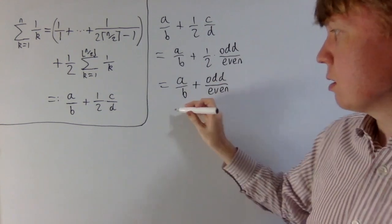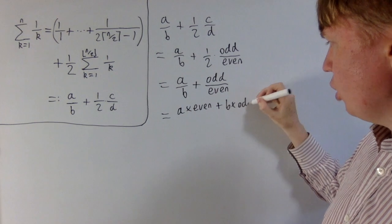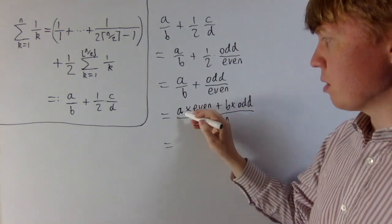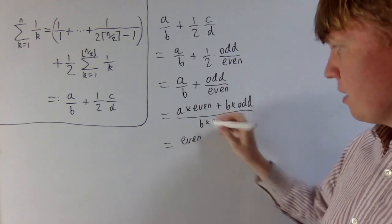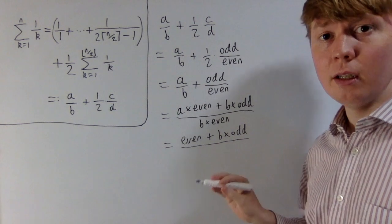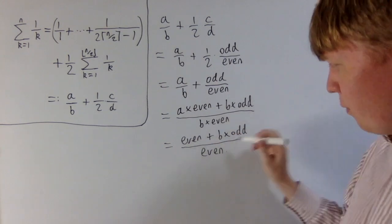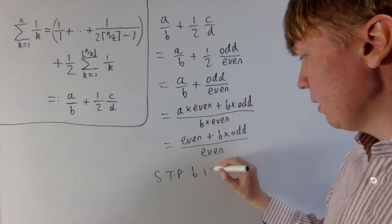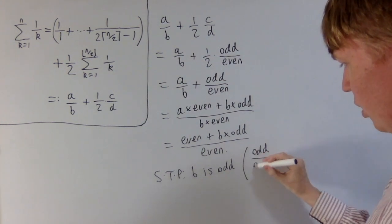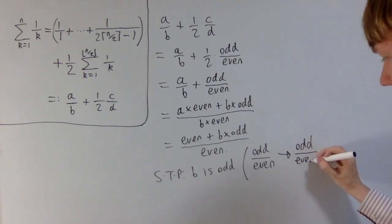Next we cross-multiply to turn this into a single fraction. The numerator becomes a times an even number plus b times an odd number, and the denominator is b times an even number. We can tidy this up: a times an even number is always even since a is a whole number, so we have even plus b times an odd number over b times an even number — and b times an even number is even. At this point, it's sufficient to prove that b is odd, because then — even though this isn't necessarily simplified — we have an odd number divided by an even number unsimplified.